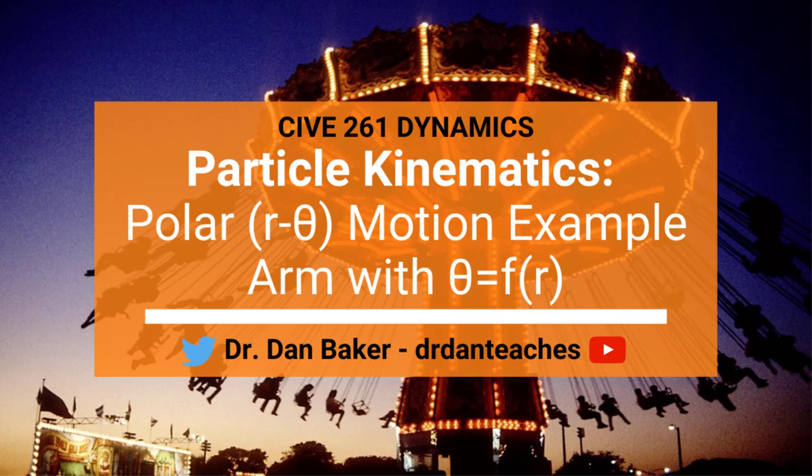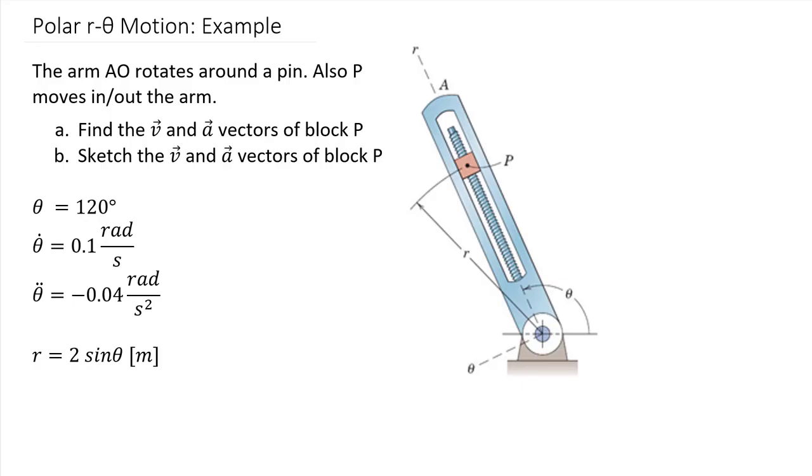All right, now that we've built all the tools we need for our tool belt, we are going to work through an example for polar motion using our theta coordinates. In this example, we have an arm. This arm itself is in fixed axis rotation around this origin point right here.